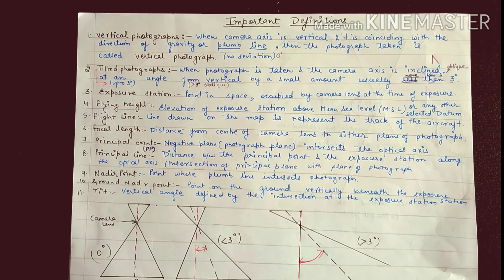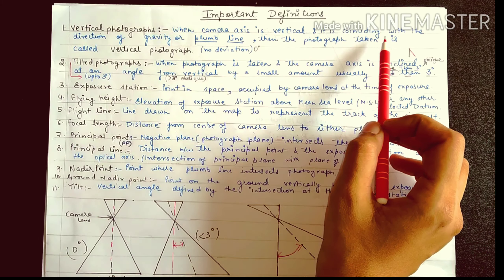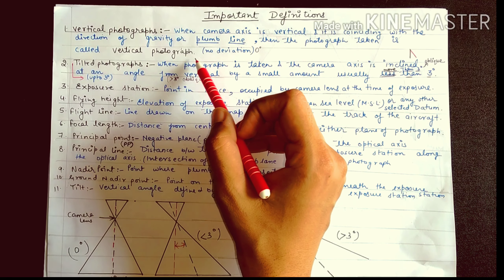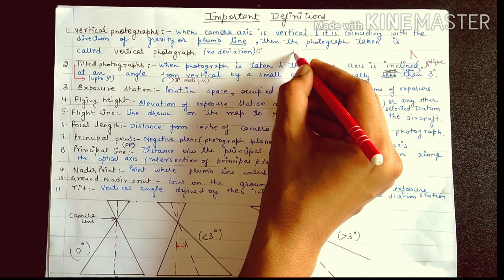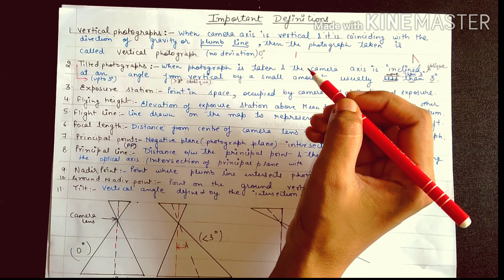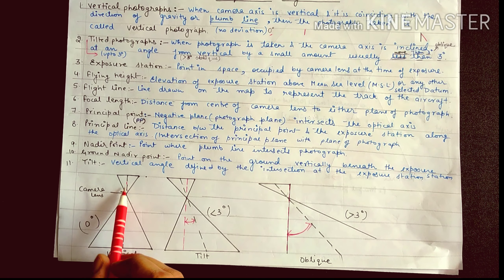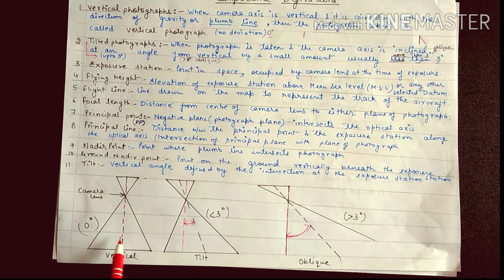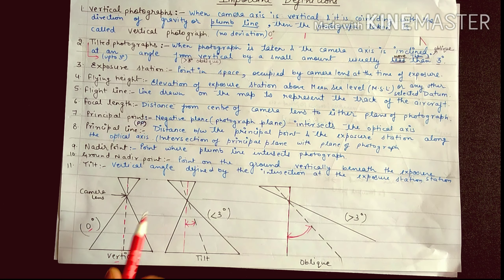The first definition is of vertical photograph. When the camera axis is vertical and coinciding with the direction of gravity or plumb line, the photograph taken is called a vertical photograph. There is no deviation between the camera axis and the plumb line. If the angle between them is 0 degrees, as shown in the diagram where the camera axis coincides with the red plumb line, it is called a vertical photograph.